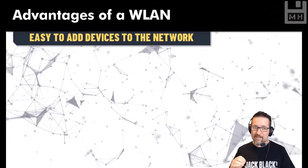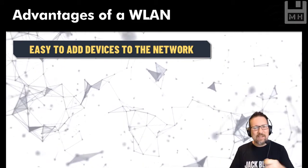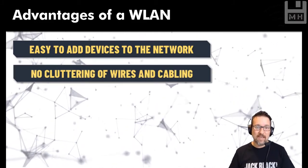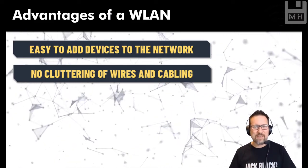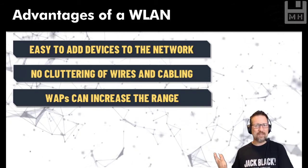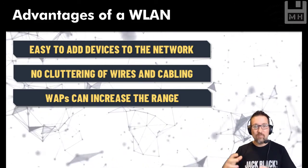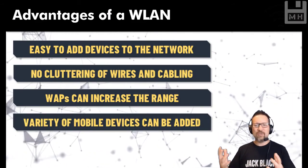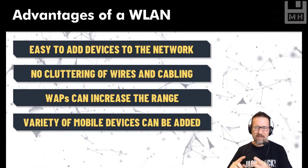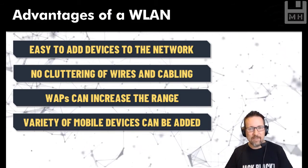For wireless local area networks, the advantages are that it's very easy to add devices — no extra cabling or switches needed, just add them wirelessly. There's no cluttering of wires and cabling. You can extend the range of your network using WAPs — wireless access points — and the more WAPs you have, the greater the range. You can also connect many types of devices: mobile phones, smartphones, tablets, laptops, and hybrids, not just devices with an ethernet port.